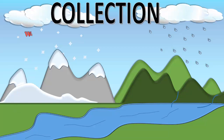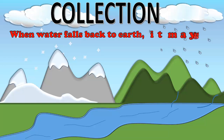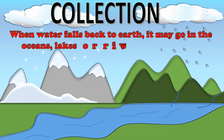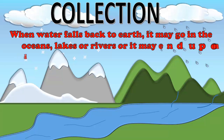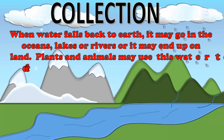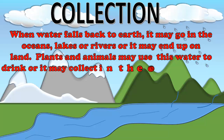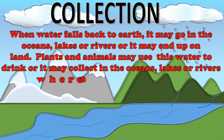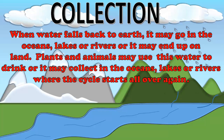Collection is when water falls back to earth and may go into the oceans, lakes, or rivers, or it may end up on land. Plants and animals may use this water to drink, or it may collect into the oceans, lakes, or rivers where the cycle starts all over again.